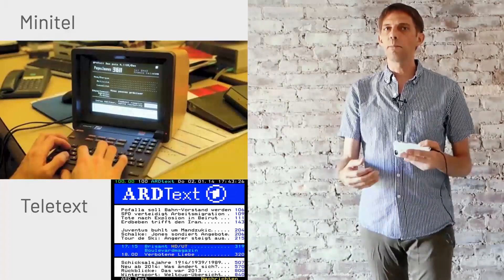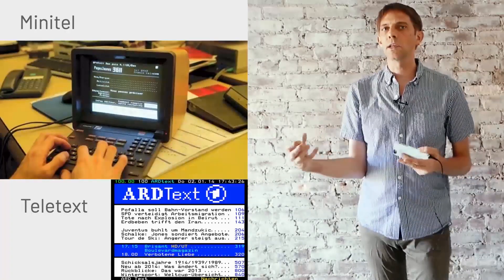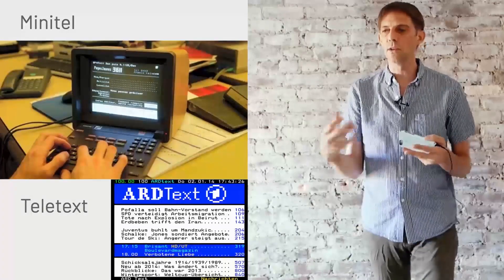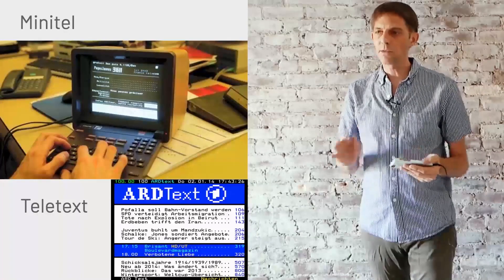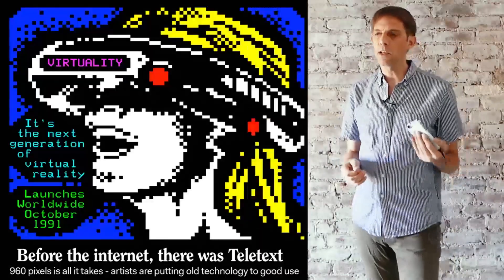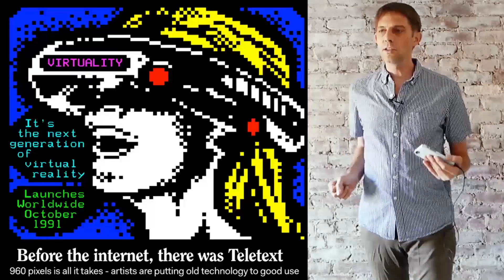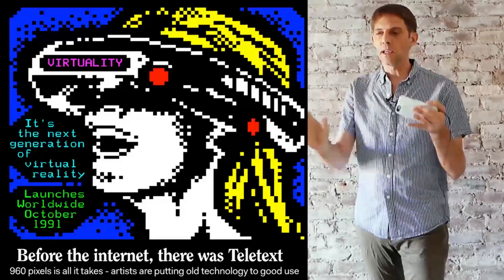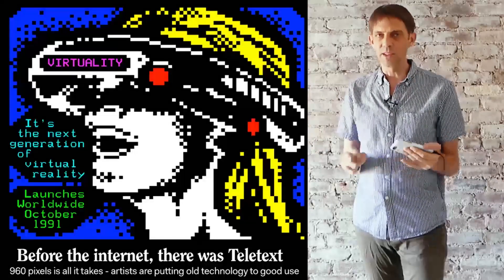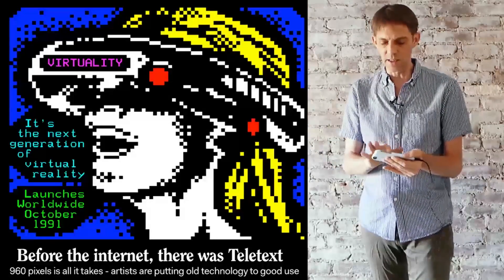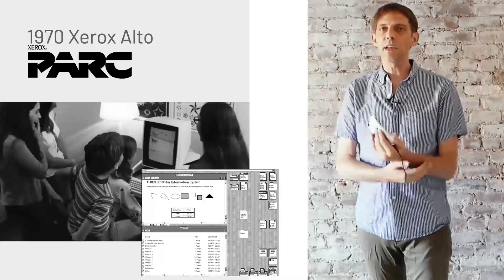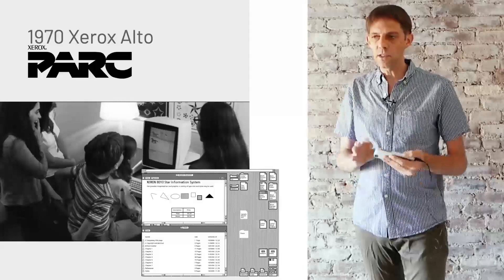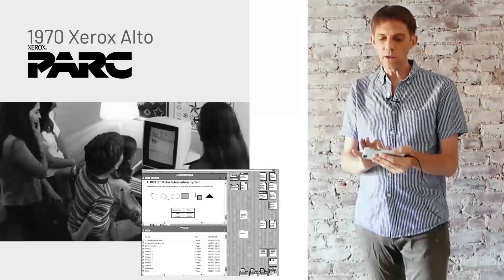In Germany they had teletext on TV. I never really used it because you had to pay per minute, and a minute was pretty expensive — like 50 cents or so to look at information. It was running on an 8-bit system with 64 pixels across, so you could do sort of little animations. They even had little pictures on there, which is kind of funny to look at now.